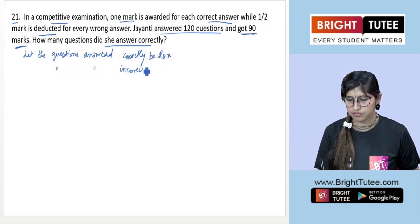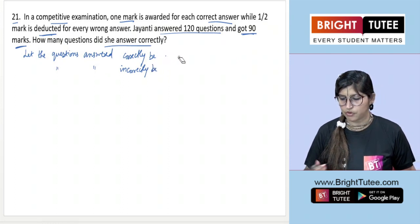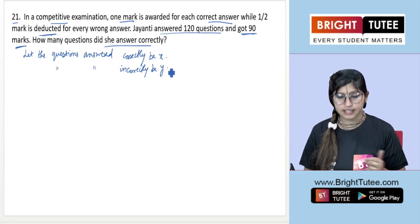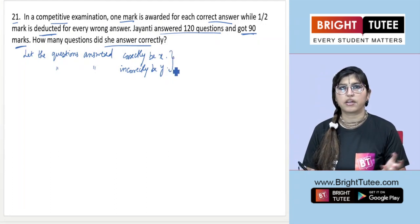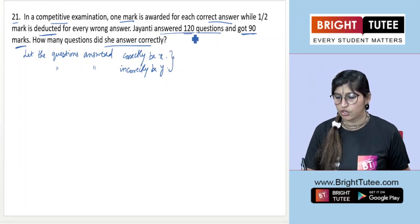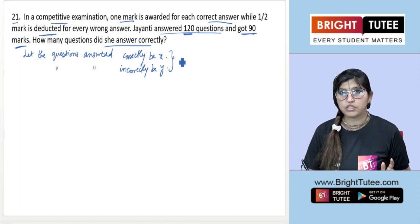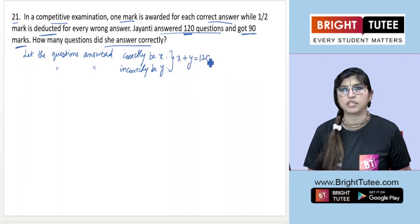Questions answered correctly is x and incorrectly is y. Jayanti answered 120 questions total, so the first equation we get is x + y = 120, because adding both types of questions gives us 120 in all.